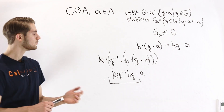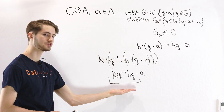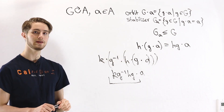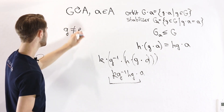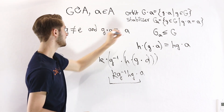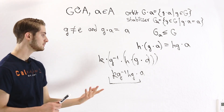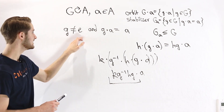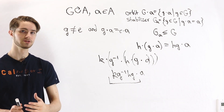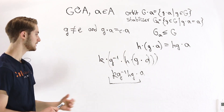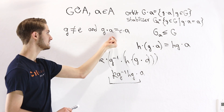One question is: what is the difference between looking at this group action and just looking at the group itself? The difference is that group elements don't need to stay distinct — it's possible to have G not equal to the identity, yet G times A equals A. This occurs when we have an element of the stabilizer. The difference between multiplying in a group action and in the original group is that sometimes we can have group elements that aren't equal to each other, but G times A still equals H times A.